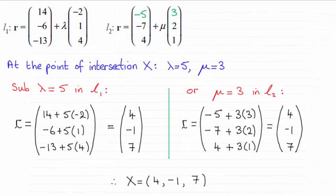Hi there. So we were asked to find the point of intersection X of the two lines, give the coordinates and you can see that the coordinates are 4, minus 1, 7.